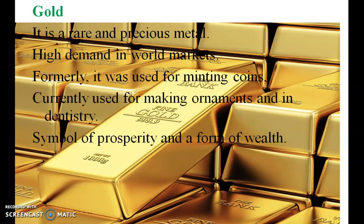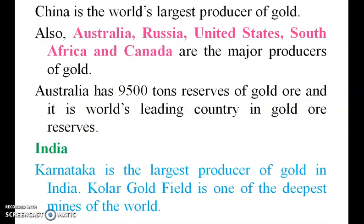Gold is a rare and precious metal with high demand in the world market. It was historically used to make coins and currencies, but nowadays it is a symbol of prosperity and a form of wealth, and is used to produce ornaments and other items. China is the largest producer of gold, followed by Australia, Russia, United States, South Africa and Canada. In India, Karnataka is the largest producer of gold and the Kolar Gold Field is one of the deepest mines in the world.